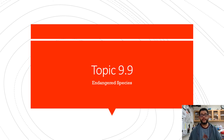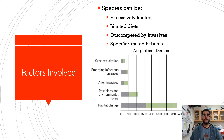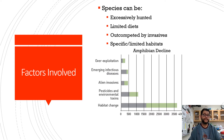Hey everybody, this is Mr. V and this is topic 9.9, the endangered species leaves review video. Remember that species can have different factors involved in why they decline. They can be excessively hunted, have limited diets, be out competed, basically be specialists.